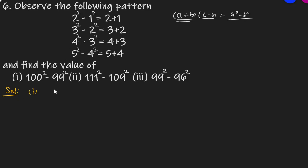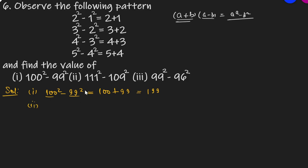First, according to the given pattern, 100 का square minus 99 square की value होगी: यहां पर 100 और 99 को केवल add कर देंगे — 100 plus 99. This is your answer.